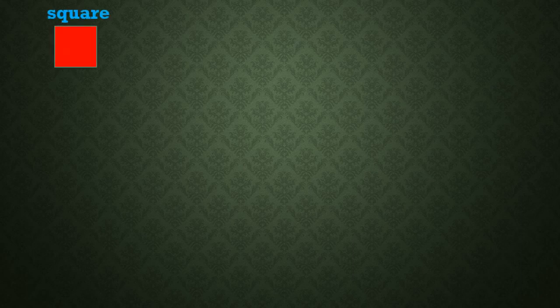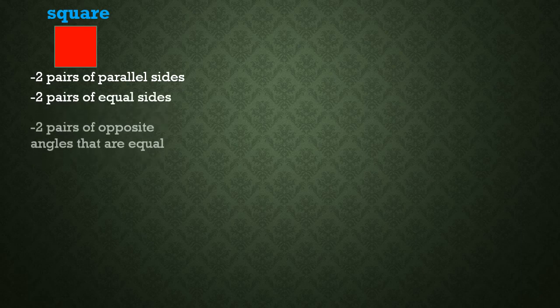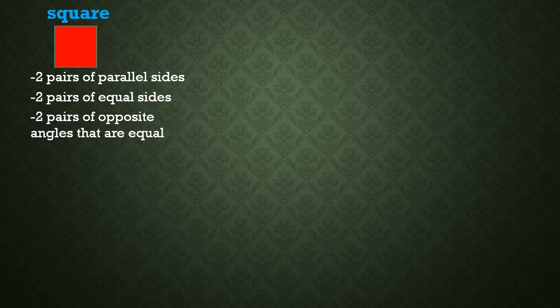Let us summarize the properties of the quadrilaterals. A square has two pairs of parallel sides, two pairs of equal sides, two pairs of opposite angles that are equal, and all angles are 90 degrees.